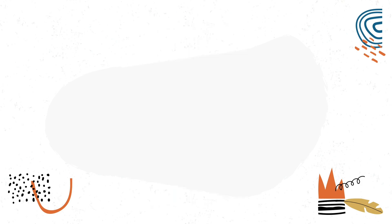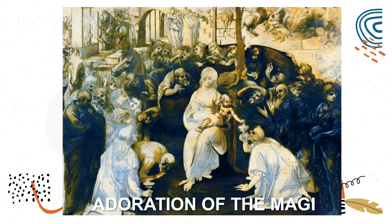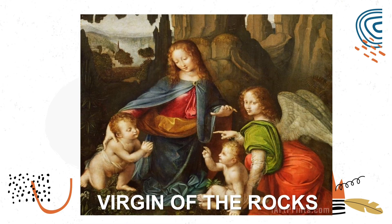His other works include The Vitruvian Man, showing the symmetry and balance of the human figure; The Adoration of the Magi, representing the three Magi as kings following a star and laying gifts of gold, frankincense, and myrrh to worship Jesus; and The Virgin of the Rocks, also known as Madonna of the Rocks, which shows Madonna and the Christ child with the infant John the Baptist and an angel in a rocky setting.